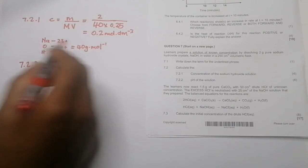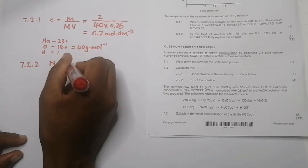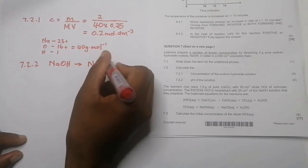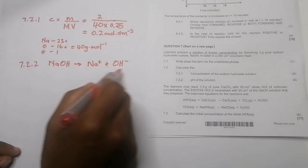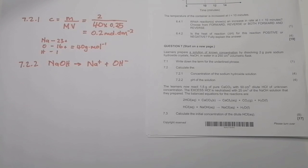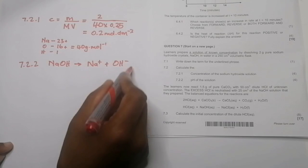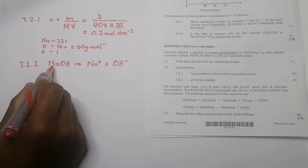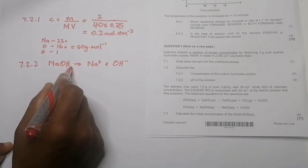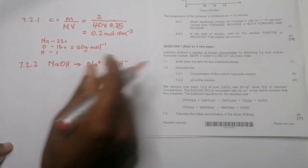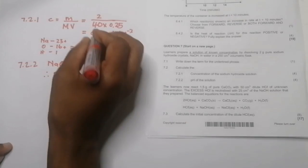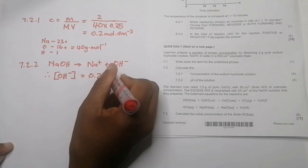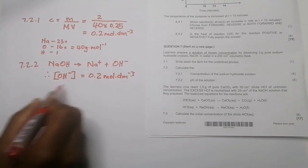They also ask us to calculate the pH of the solution. Keep in mind we have a base here. Sodium hydroxide dissociates to form sodium ions and hydroxide ions. When calculating pH we don't use hydroxide ions directly — we use hydronium ions, H⁺. For every one mole of sodium hydroxide, we produce one mole of hydroxide ions, so the concentration of hydroxide ions is also 0.2 moles per cubic decimetre.